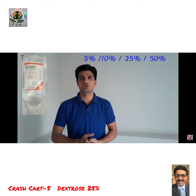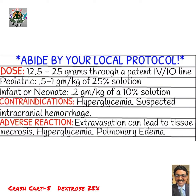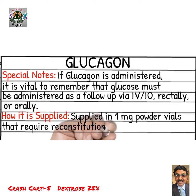Five percent dextrose is a maintenance fluid and is isotonic. However, concentrations of 10%, 25%, or 50% are hypertonic and can cause osmotic diuresis and dehydration. The appropriate hypoglycemia threshold varies by age, ranging from 30 to 60 milligram percent.